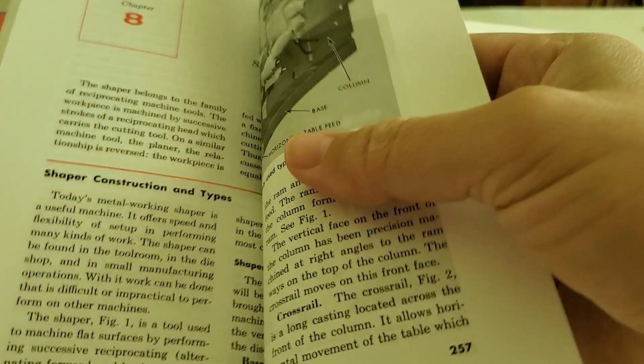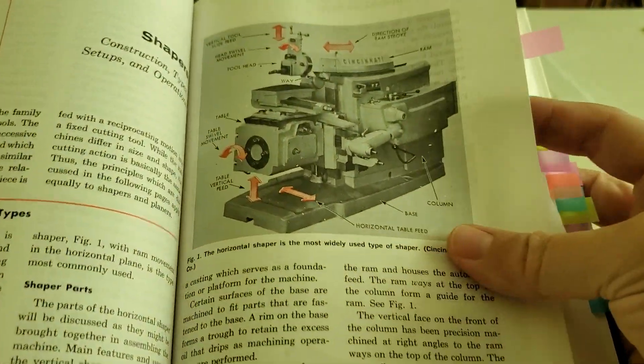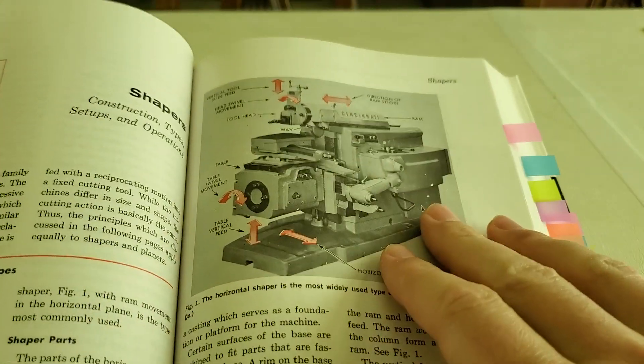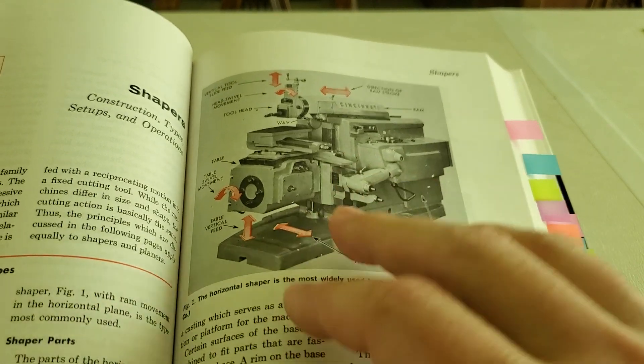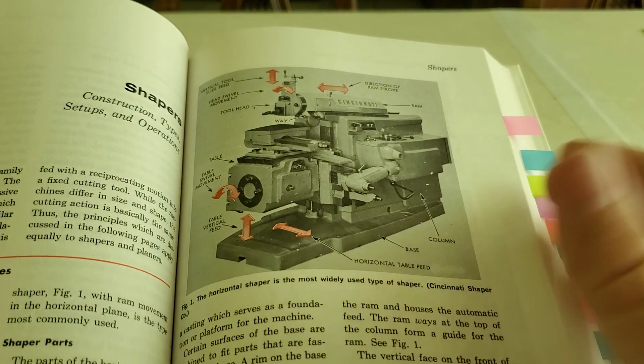But that's good, because even though it is out of date, it covers things like the shaper. The shaper is really not covered in a whole lot of areas.